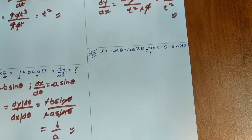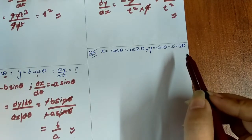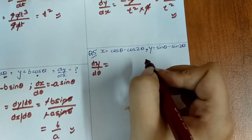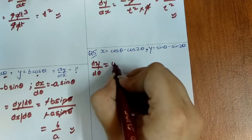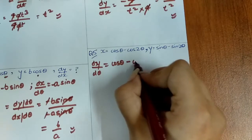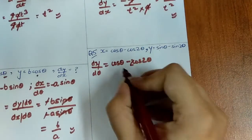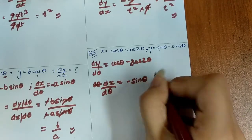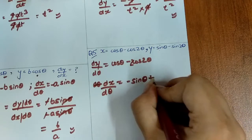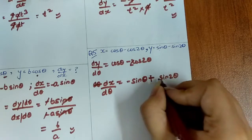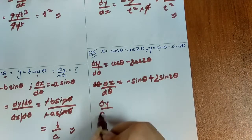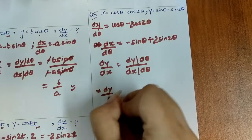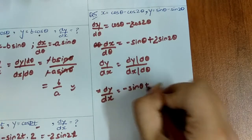Question 5: x = cosθ − cos 2θ, y = sinθ − sin 2θ, find dy/dx. First dy/dθ: derivative of sinθ is cosθ, derivative of −sin 2θ is −cos 2θ × 2. Then dx/dθ: derivative of cosθ is −sinθ, derivative of −cos 2θ is +sin 2θ × 2. So dy/dx = (cosθ − 2cos 2θ) / (2 sin 2θ − sinθ).